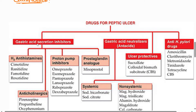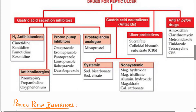Under gastric acid secretion inhibitors, the sub-types are: H2 antihistamines — cimetidine, ranitidine, famotidine, roxatidine; anticholinergics — pirenzepine, propantheline, oxyphenonium; proton pump inhibitors — omeprazole, esomeprazole, pantoprazole, lansoprazole, rabeprazole, dexrabeprazole; and prostaglandin analogs — misoprostol.